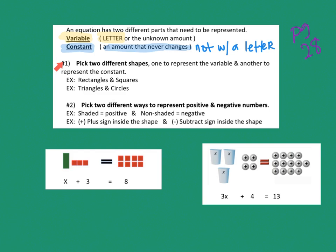Now, how do you draw a picture of an equation? You can choose two different shapes — one to represent the variable, and the other to represent the constant. You might use rectangles and squares, though sometimes squares look like rectangles. Triangles and circles, rectangles and triangles, or squares and circles could also work.